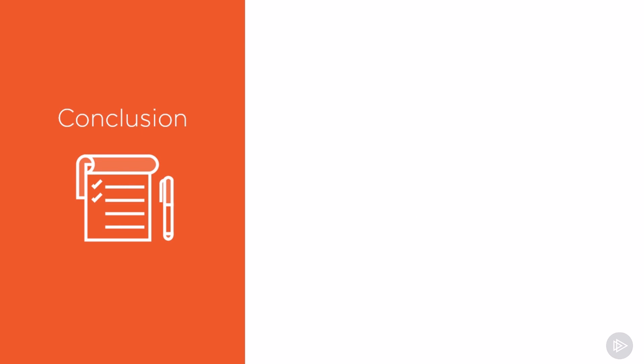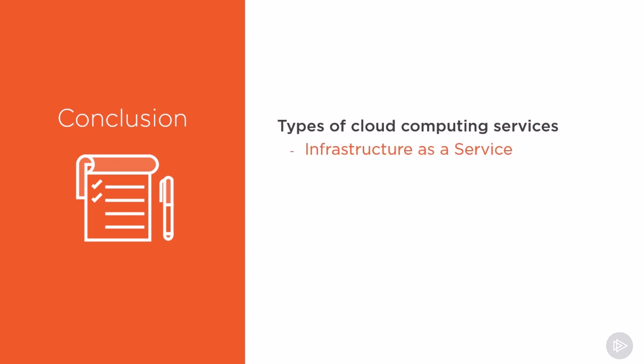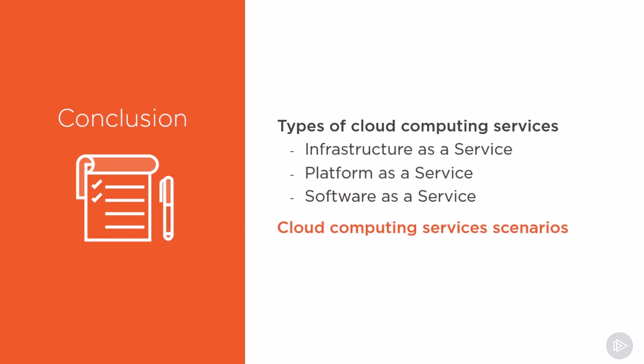Before finishing up this module, let's review what we have learned. In this module, we have learned the different types of cloud computing services — Infrastructure as a Service, Platform as a Service, and Software as a Service — as well as how to differentiate between those three. We have also looked at different scenarios for each type of cloud computing service. In the next module, we will learn about the different types of cloud computing deployment models. Thank you very much for listening, and I hope you found it informative.